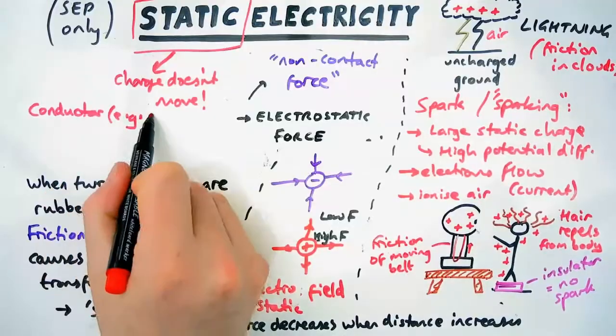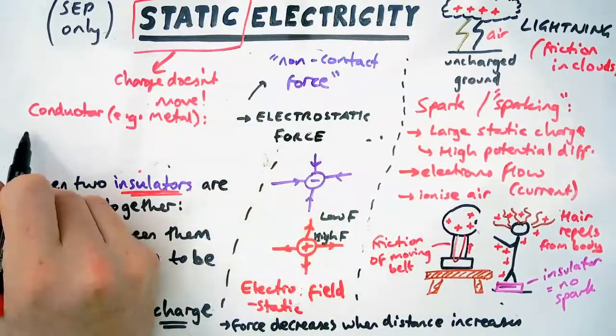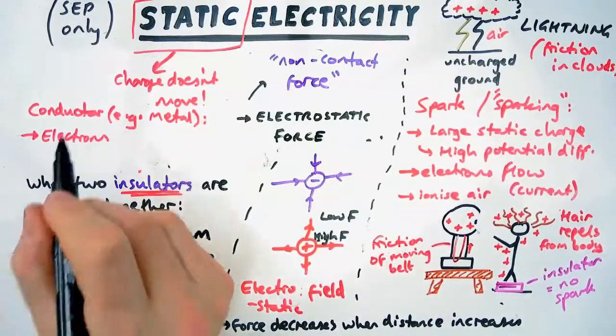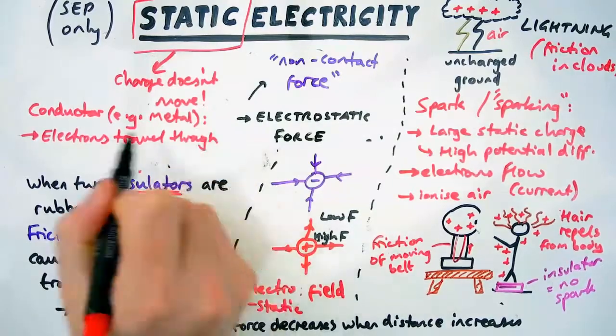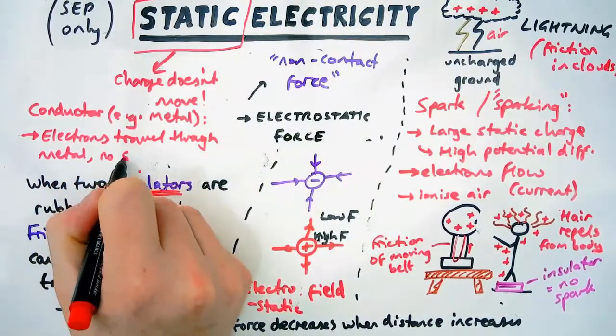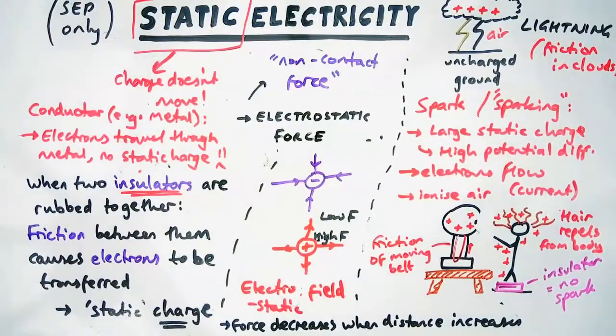So sometimes questions will ask you, well, what if you put a conductor or a metal and rubbed it instead? Well, if you use a conductor, conductors are conductors because electrons can travel through them. So if you used a conductor instead of an insulator, the electrons will travel through the metal, so they will not be stationary, which means there's no static charge. You won't get any build-up at all.